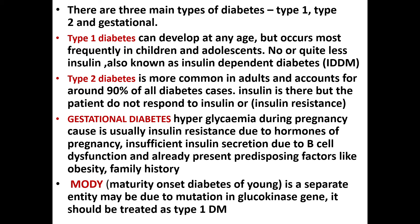Complications of gestational diabetes may include premature birth or prolonged delivery time. MODY — maturity onset diabetes of the young — is a separate entity that may be due to mutation in the glucokinase gene. It should be treated as Type 1 diabetes, meaning insulin must be used for it.